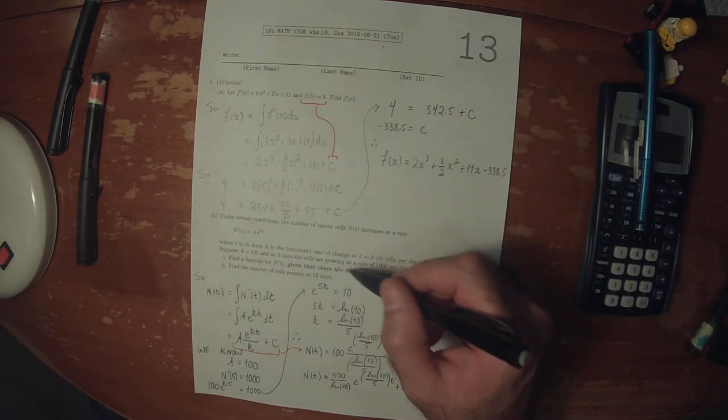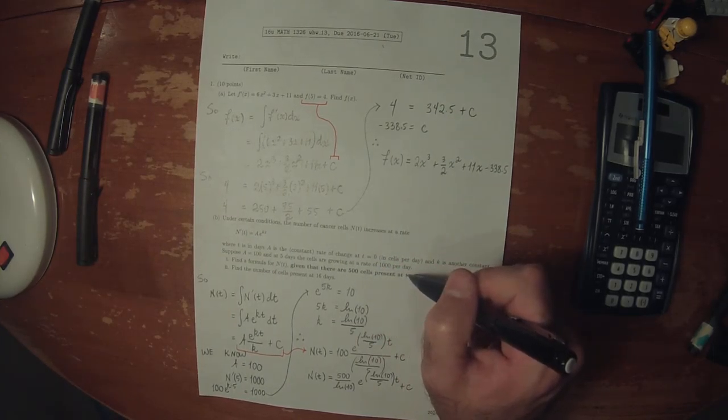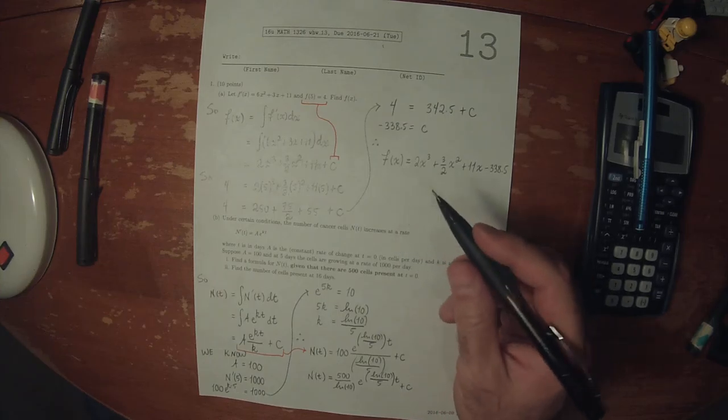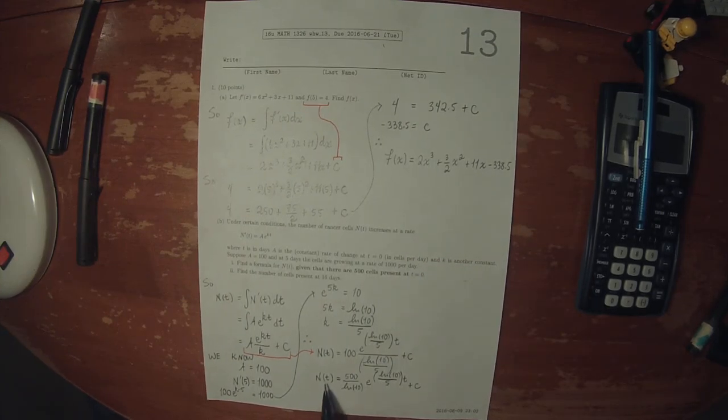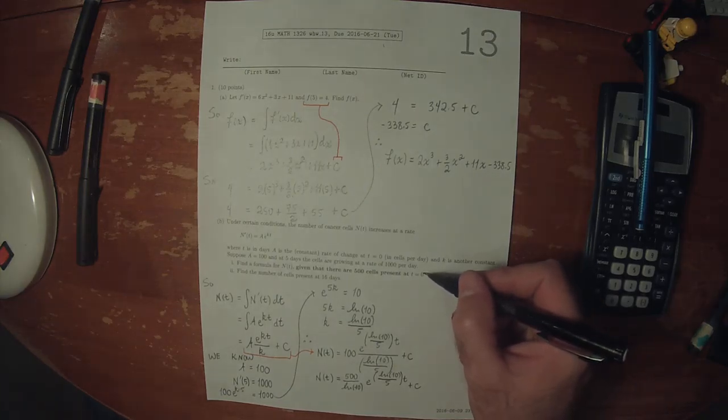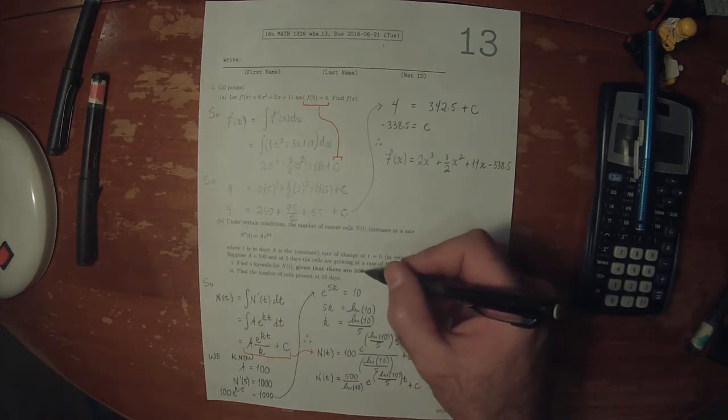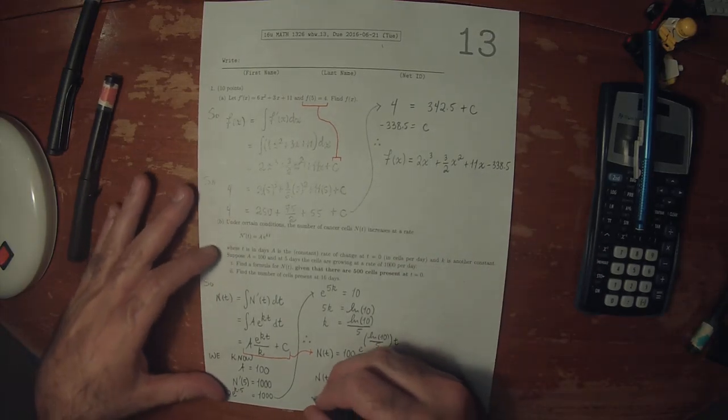Given that there are 500 cells present at time 0, that's telling us that for this n, when we plug in 0, we're supposed to get 500.